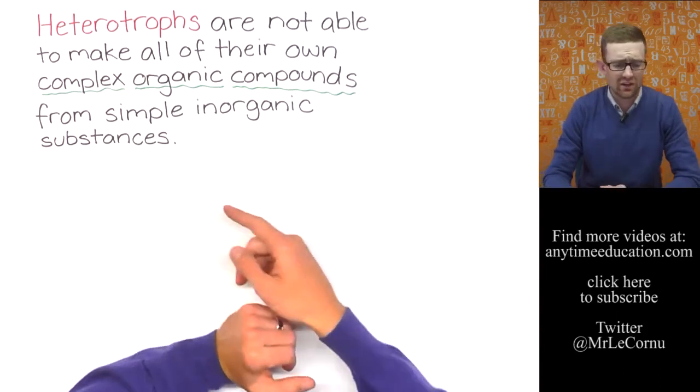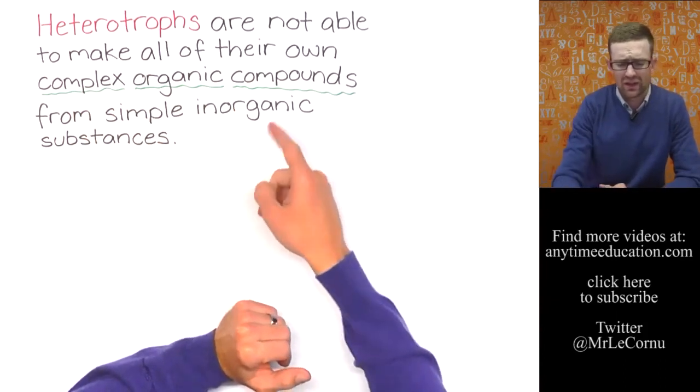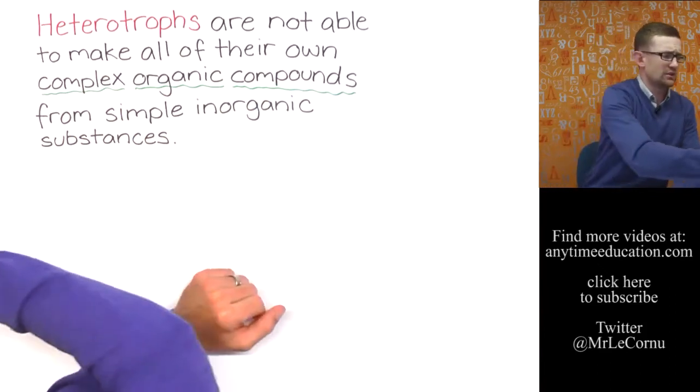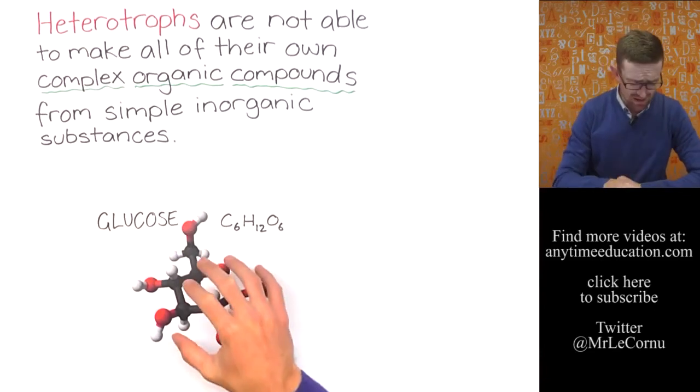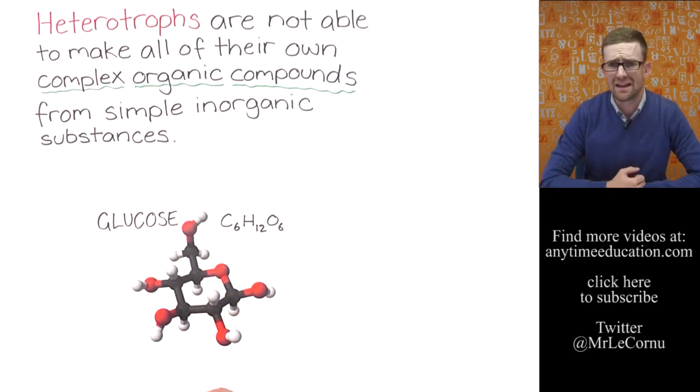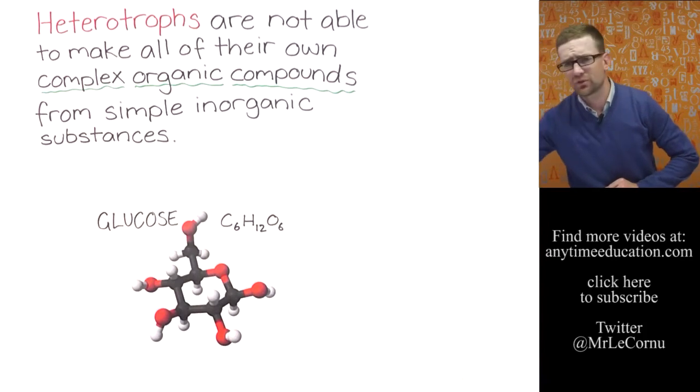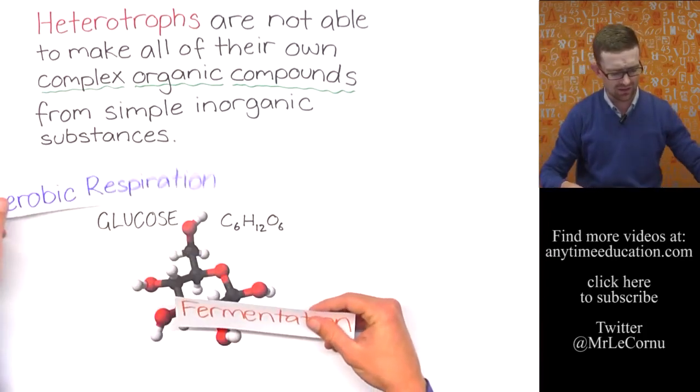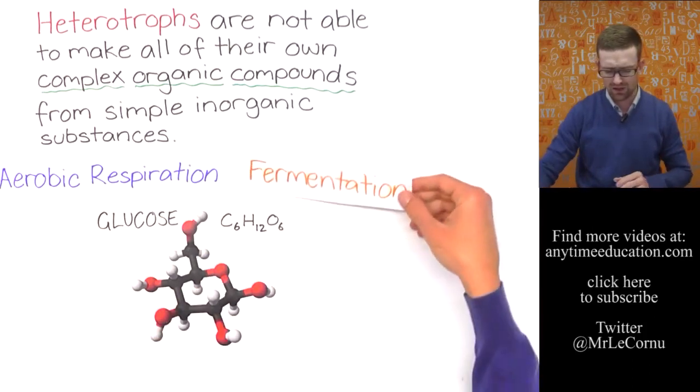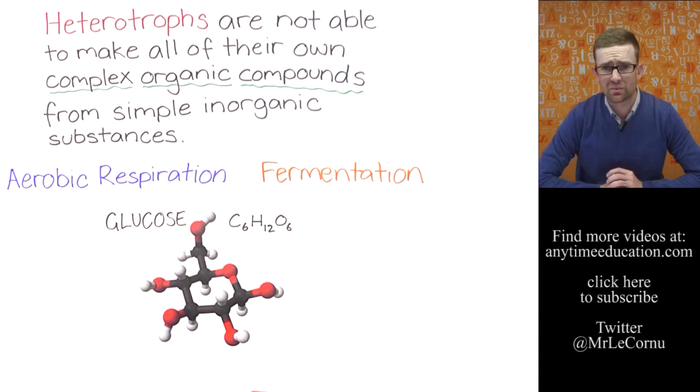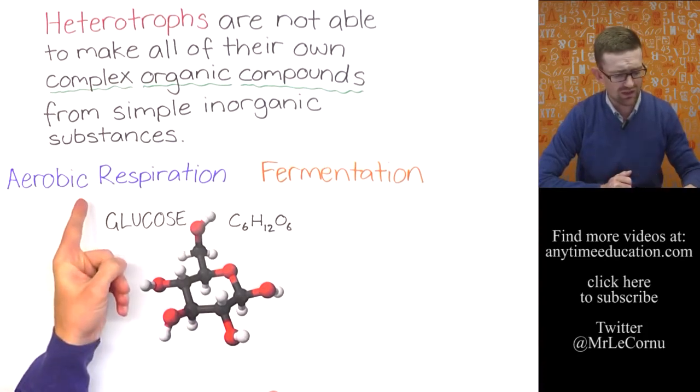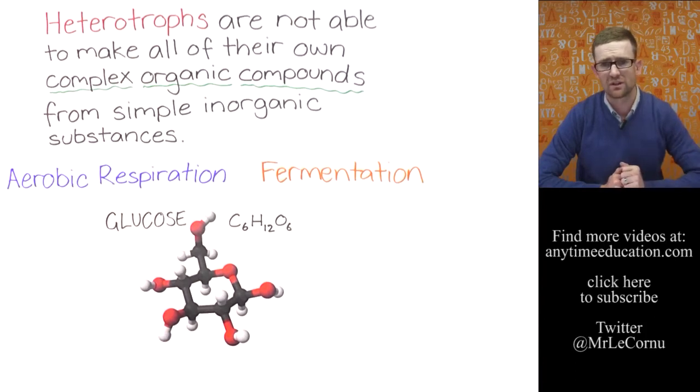So as I said earlier one of the major complex organic compounds that living things use as an energy source is glucose and organisms need to be able to break glucose down to release energy to use for their processes. And the two types of processes that can break down glucose to release energy are called aerobic respiration and fermentation. To find out more about those processes check out the video called what is aerobic respiration and check out the video called what is fermentation.